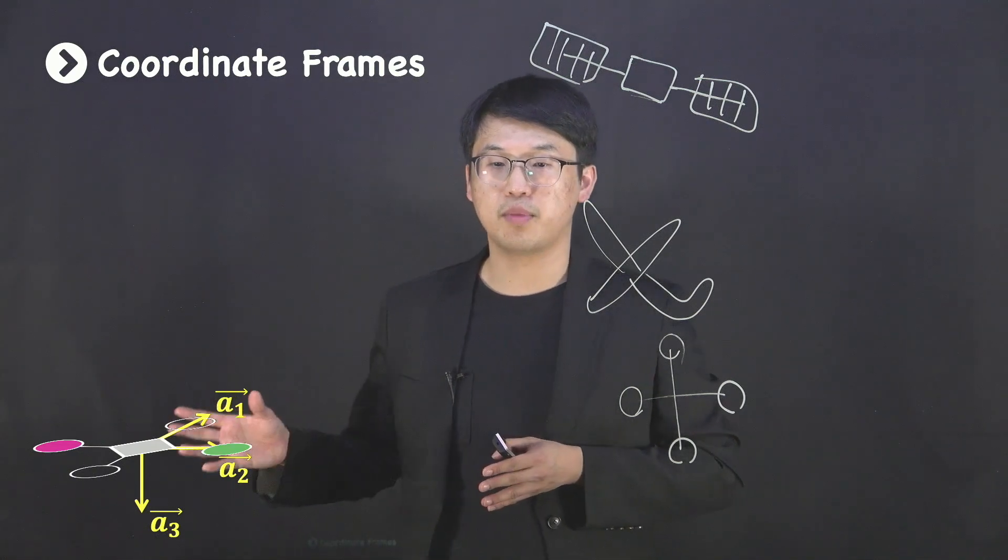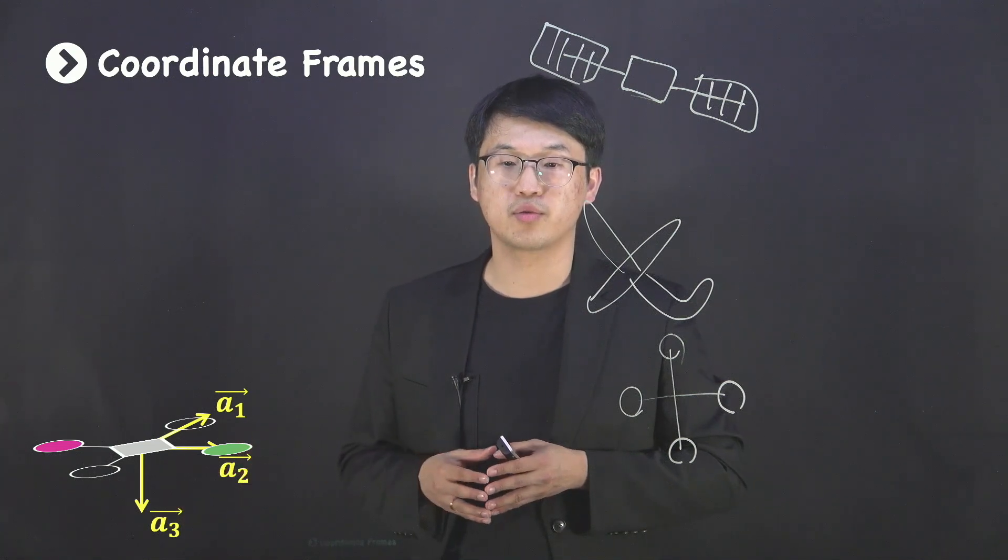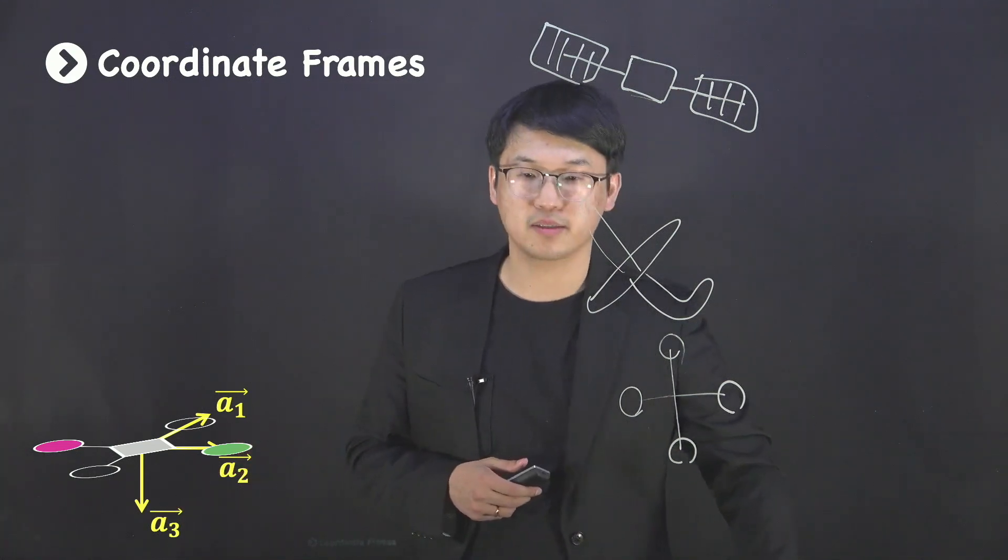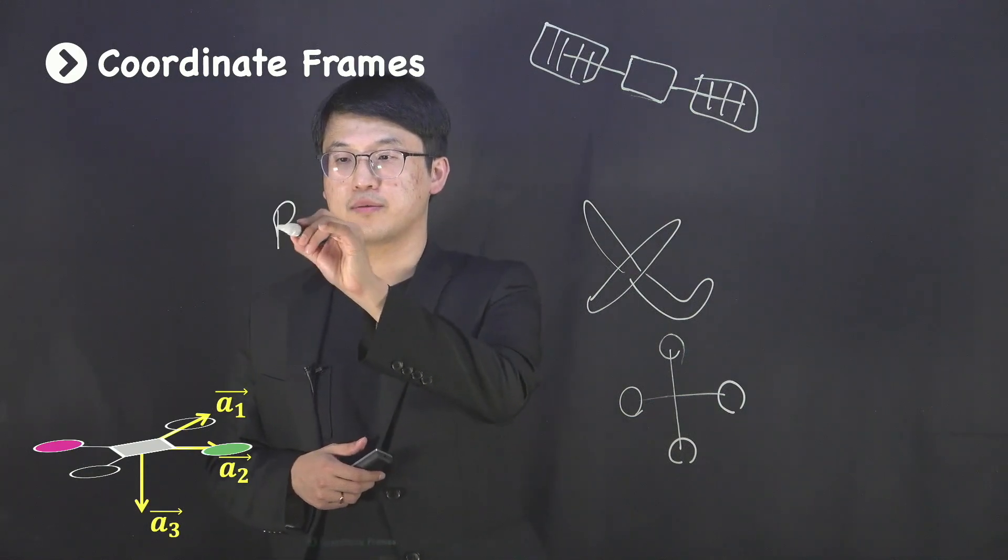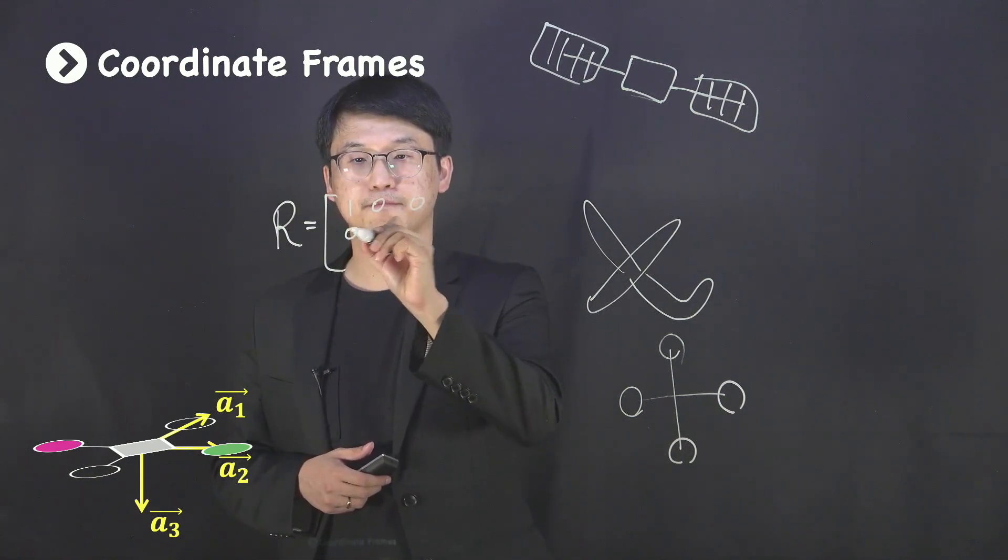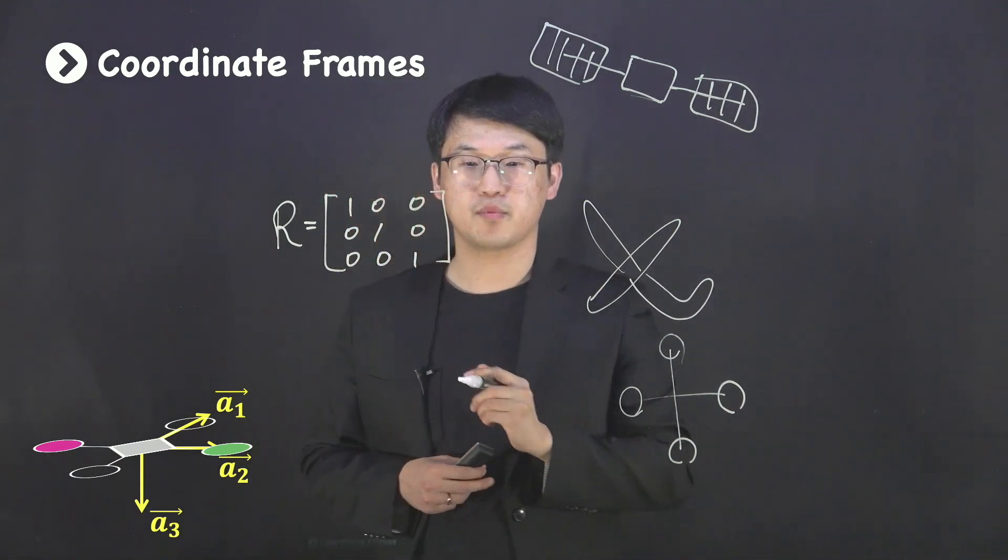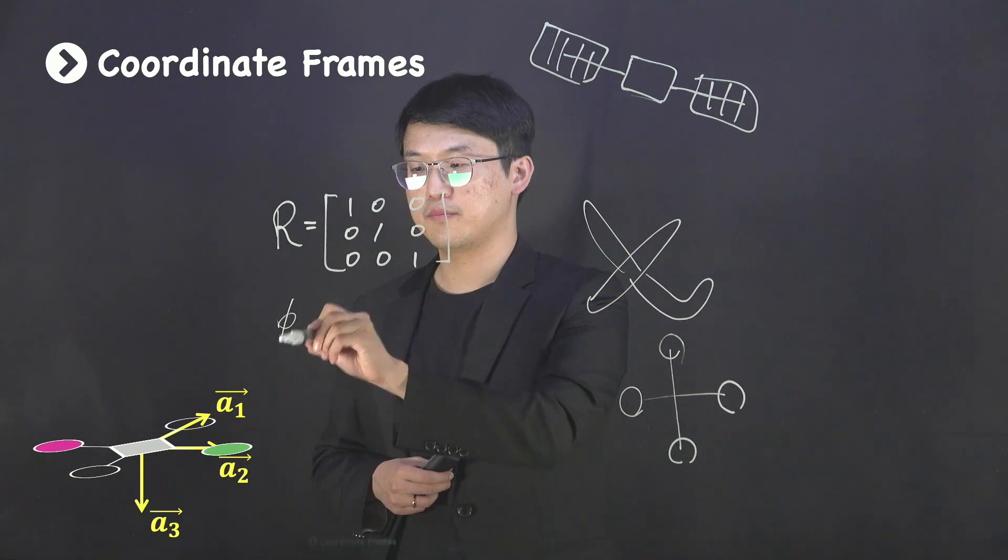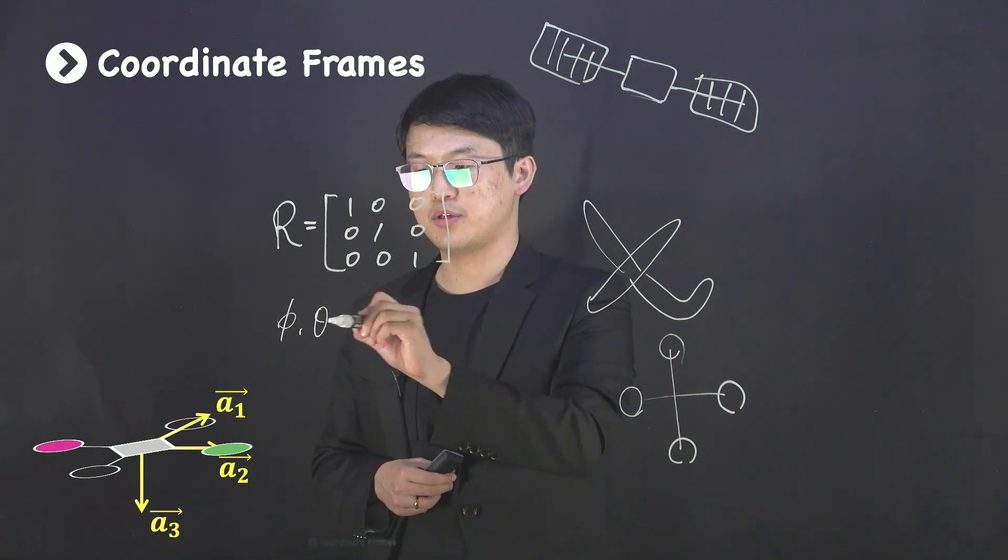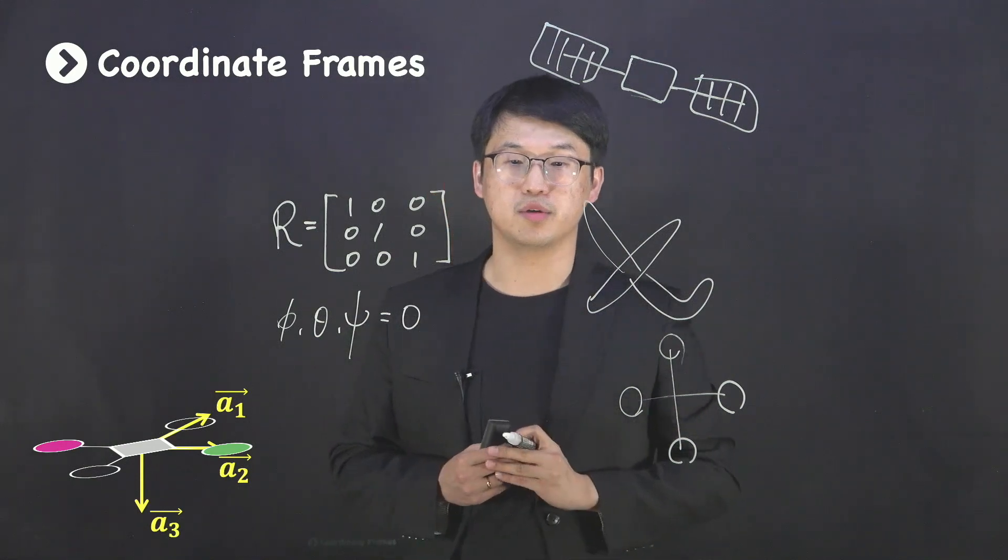When the body axes are aligned with the inertial axes, your rotation matrix is the same as the identity matrix. Or, your roll, pitch, and yaw angles are all zeros.